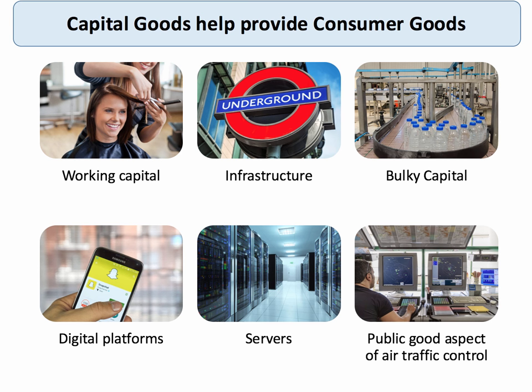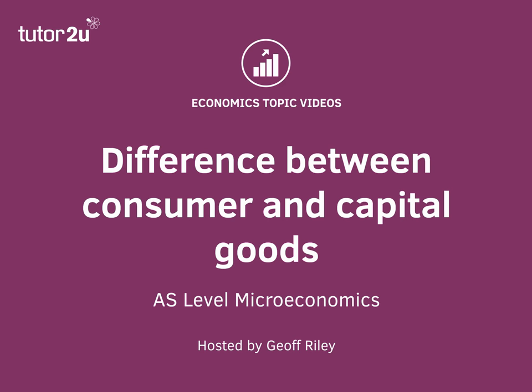And also the huge server-side technologies that power businesses such as Google, the public good aspect, the infrastructure — the capital goods we need to maintain safe air traffic control as we fly around the world. Capital goods are really key in helping to provide safe consumer goods and services.